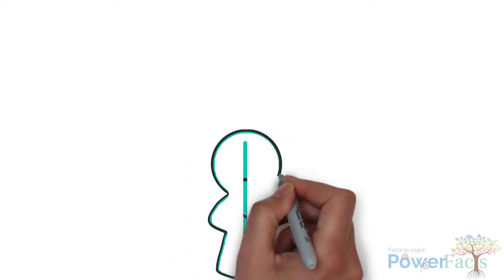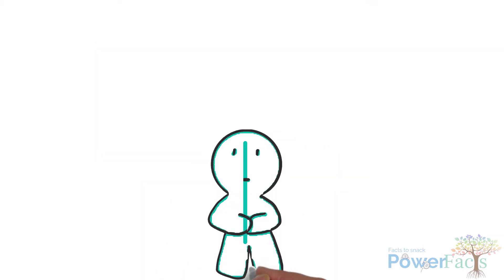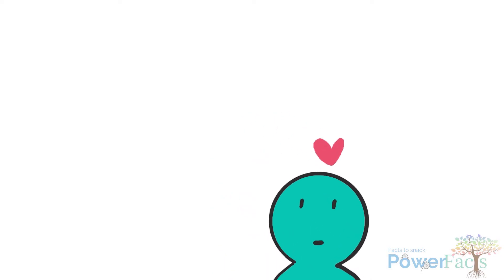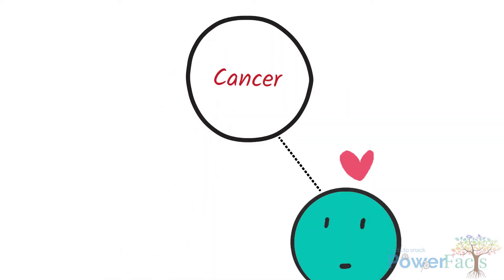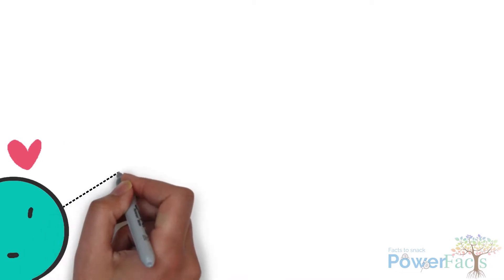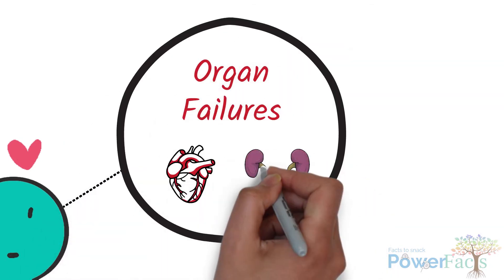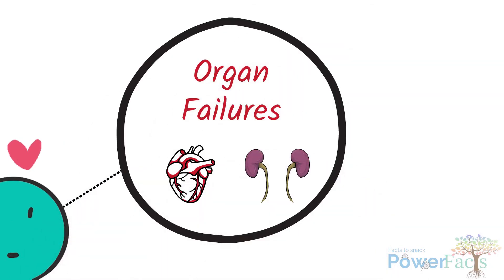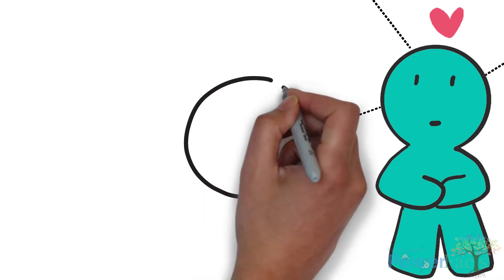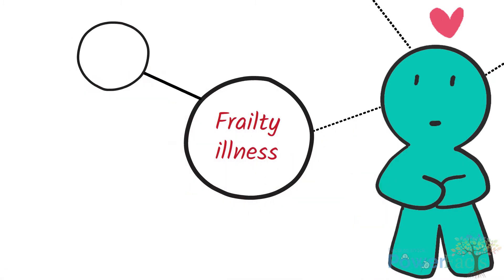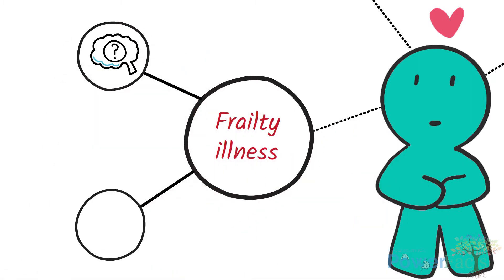Patients with palliative conditions commonly have one of the following categories of illnesses: cancer, organ failures such as heart failure or kidney failure, and frailty-related illnesses such as dementia or Parkinson's disease.